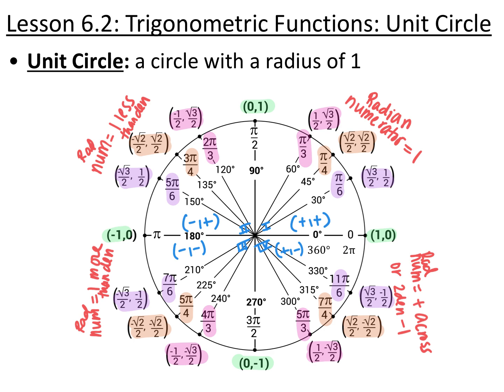For radian measurements, the denominators always go over 6, over 4, over 3 moving around the circle. In the first quadrant the numerator is just 1 pi. In the second quadrant the numerator is always 1 less than the denominator: 2 over 3, 3 over 4, 5 over 6. In the third quadrant it's 1 more: 7 over 6, 5 over 4, 4 over 3. In the fourth quadrant you add the numerator and denominator from the second quadrant, or use twice the denominator minus 1.